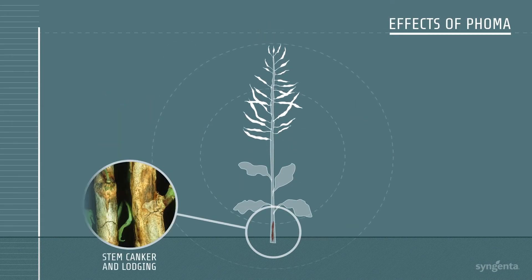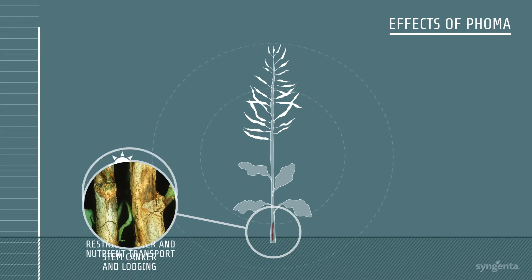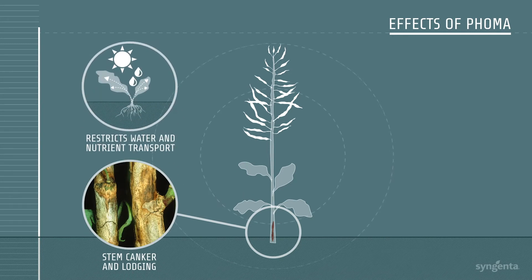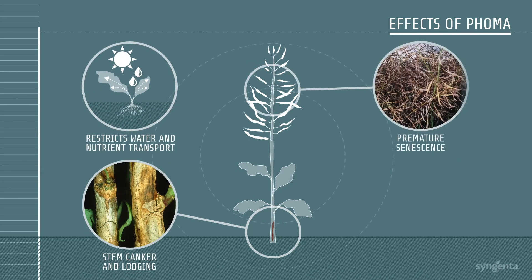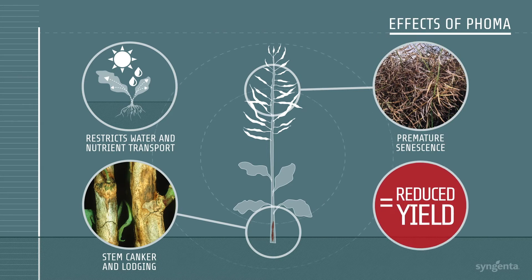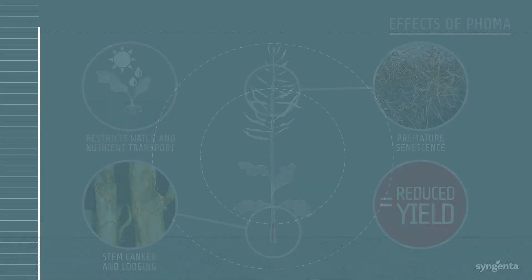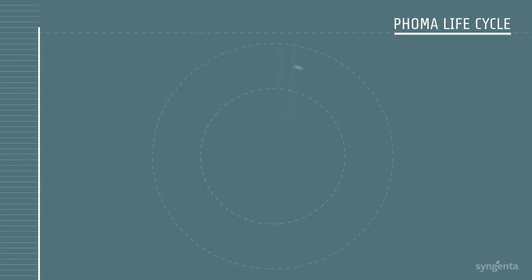FOMA causes stem cankers which restrict water and nutrient uptake and make the crop more prone to lodging. Uncontrolled FOMA typically robs yield by half a tonne a hectare, but can be up to one tonne in high infestations.